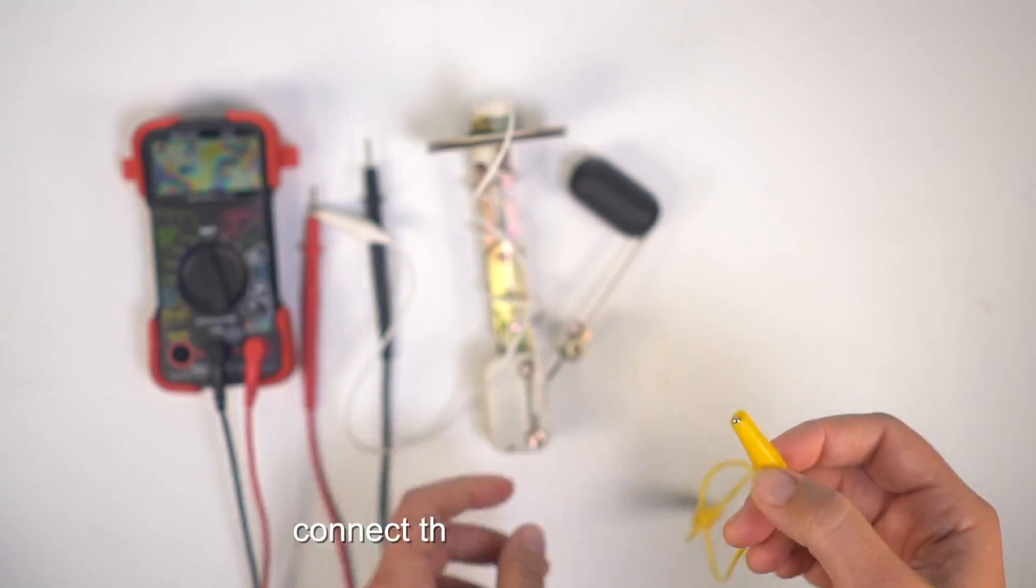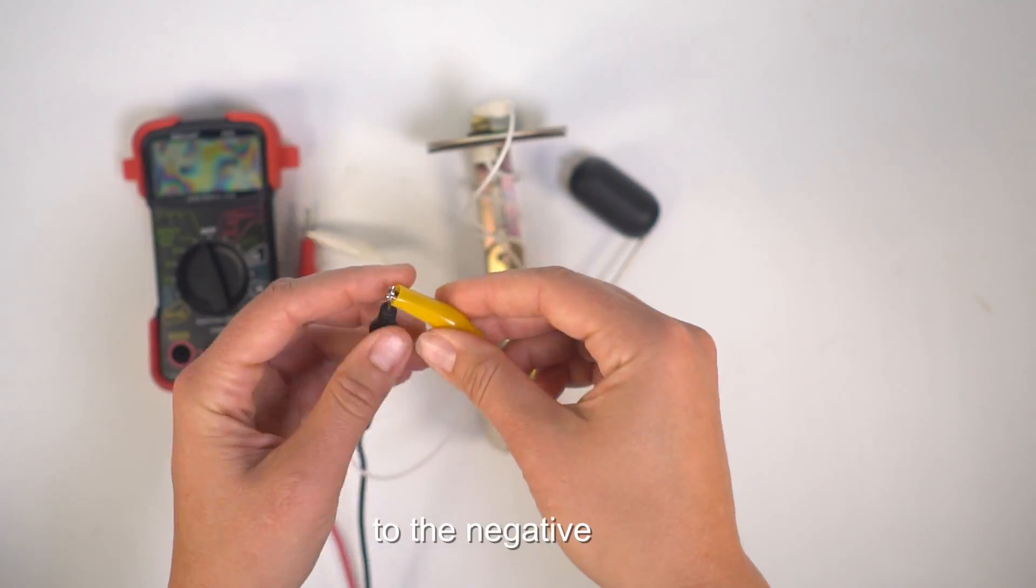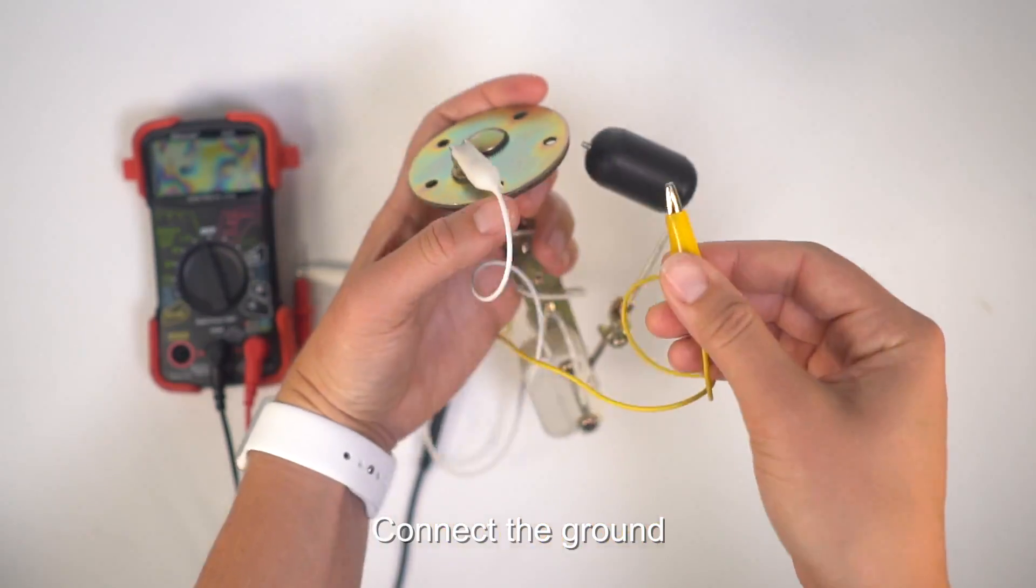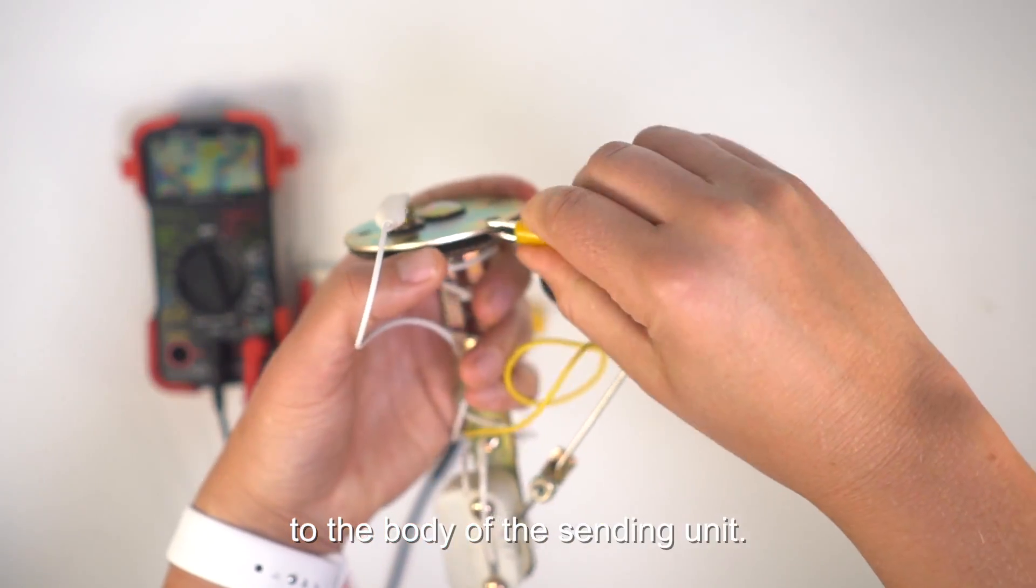Second, connect the yellow alligator clip to the negative lead, or the ground. Connect the ground to the body of the sending unit.